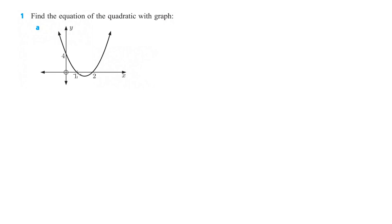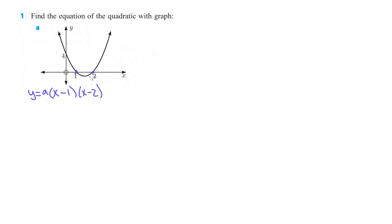So now instead of having the equation and drawing the graph, now we have the graph and we've got to come up with the equation. The first big key thing here is that our x-intercepts are at 1 and 2. So that means we know that y equals — we're going to put an A out here because we don't know what that number is out in front. We do know that it's positive because it opens up, but we'll just leave it as A. So we know this has to be x minus 1 for this x-intercept and x minus 2 for this x-intercept.